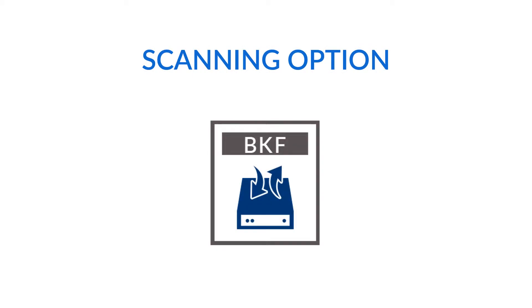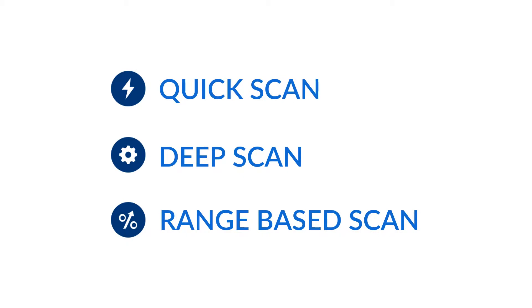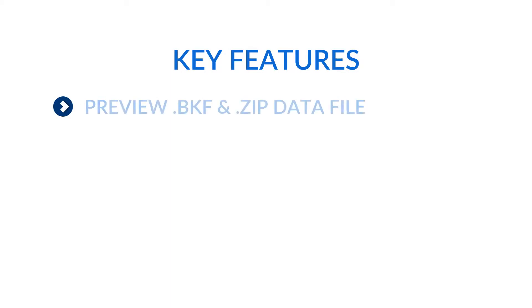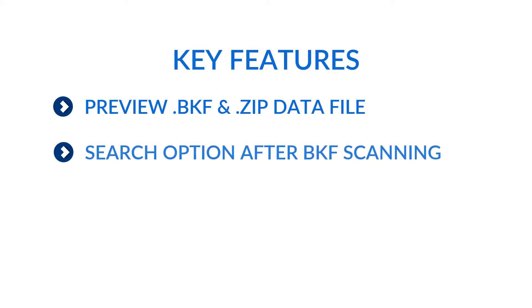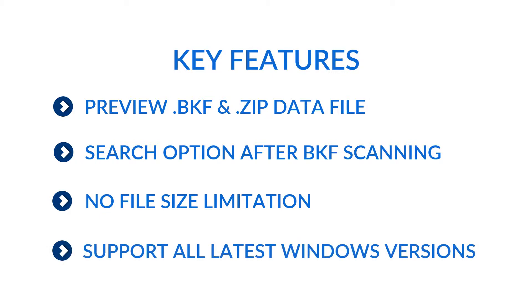There are three main scanning options. You can choose the quick scanning option for files having minimum corruption, and the deep scanning option for highly corrupted backup files. Range-based scan can be selected to scan specific BKF data. The tool can give you an instant preview for BKF and ZIP data files with properties, and provides a search option to search within scanned BKF file data. You can add any file size to open — there is no file size limitation — and it can work with all the latest Windows versions.